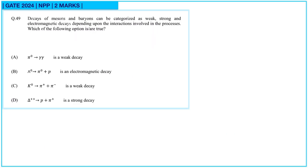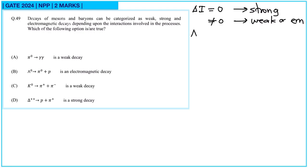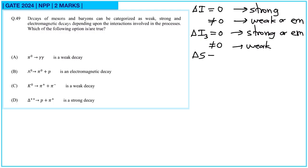Next question: decays of mesons and baryons can be categorized as weak, strong, and electromagnetic decays. The key rules are: if ΔI = 0, the interaction is strong; if ΔI ≠ 0, it is weak or electromagnetic. If ΔI₃ is conserved, it is strong or electromagnetic; if not, it is weak. If strangeness ΔS = 0, it is strong or electromagnetic; if ΔS = 0 or ±1, it can be weak.